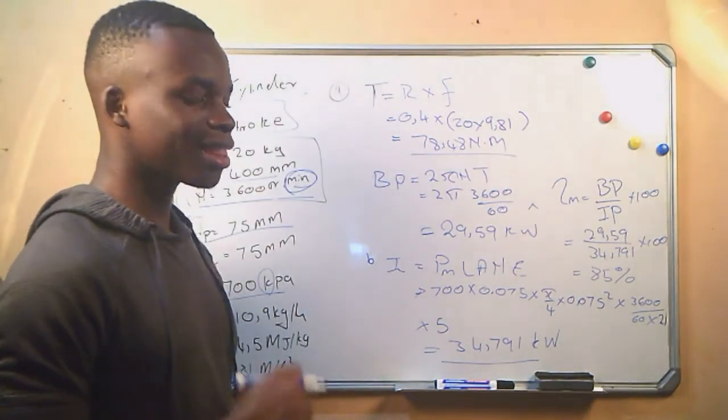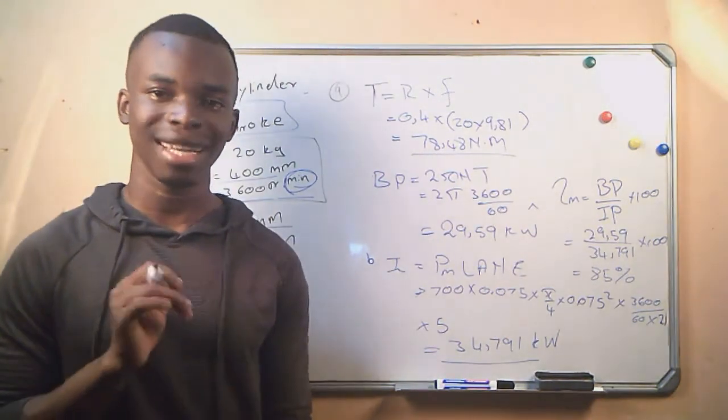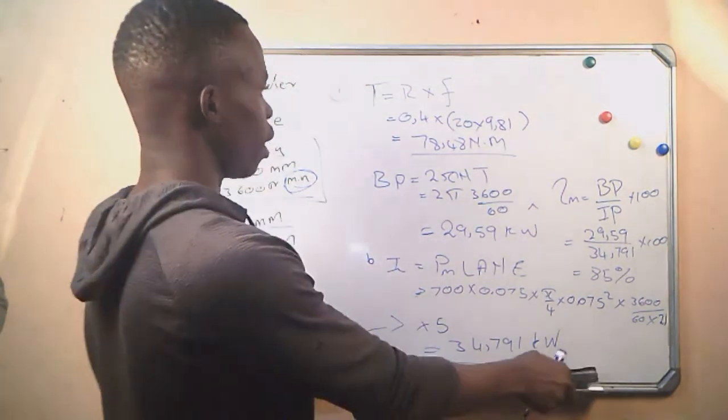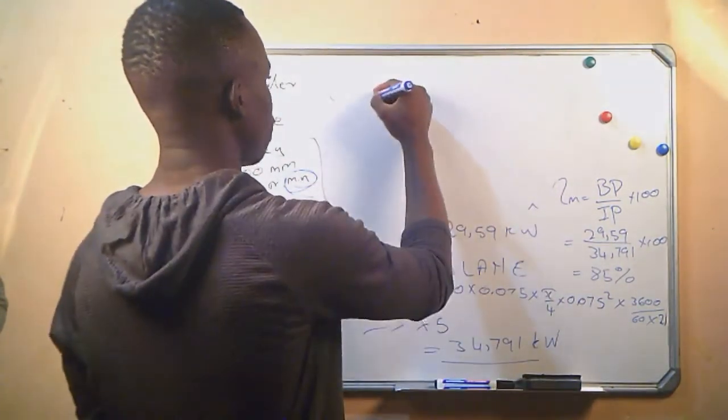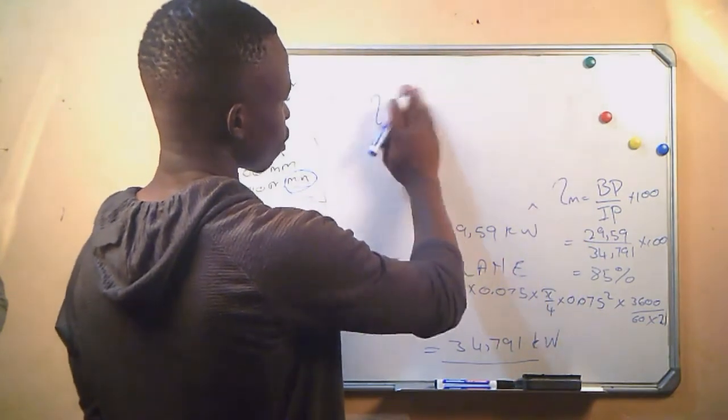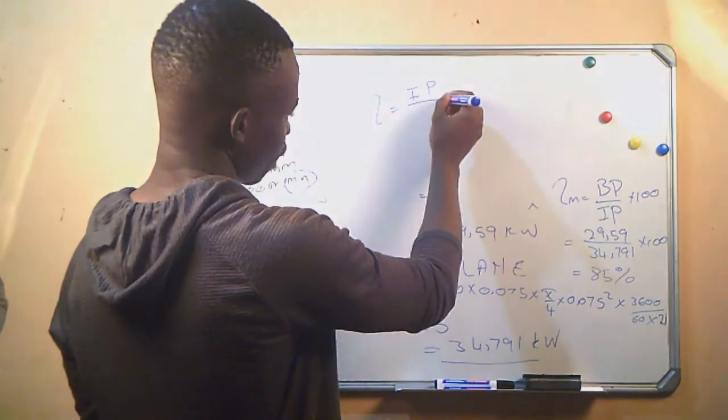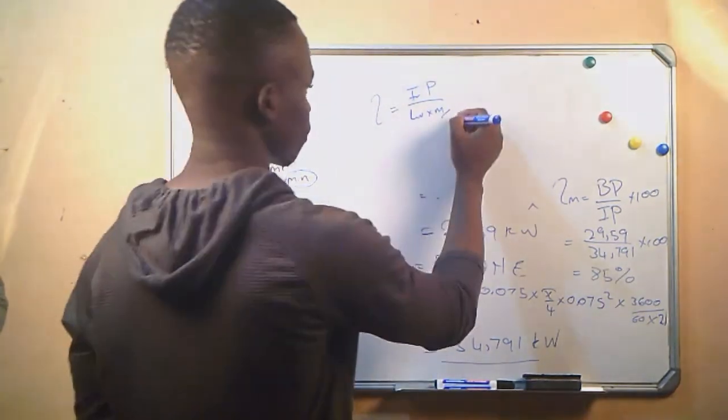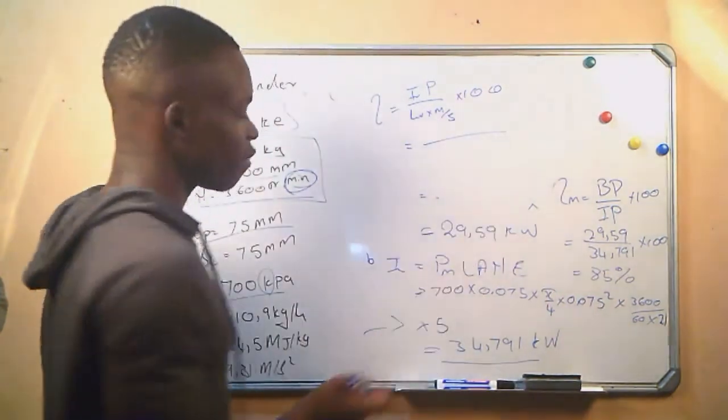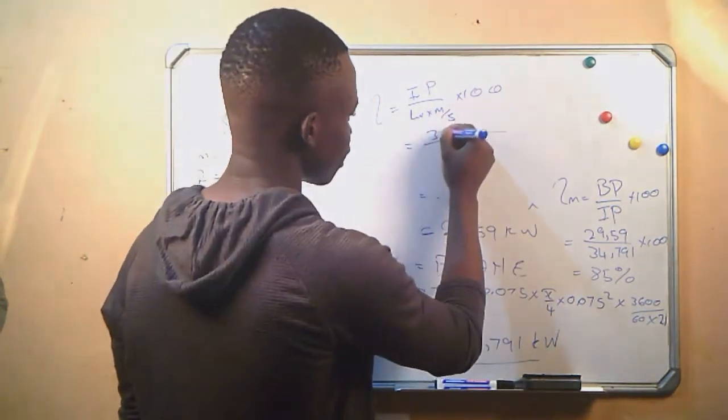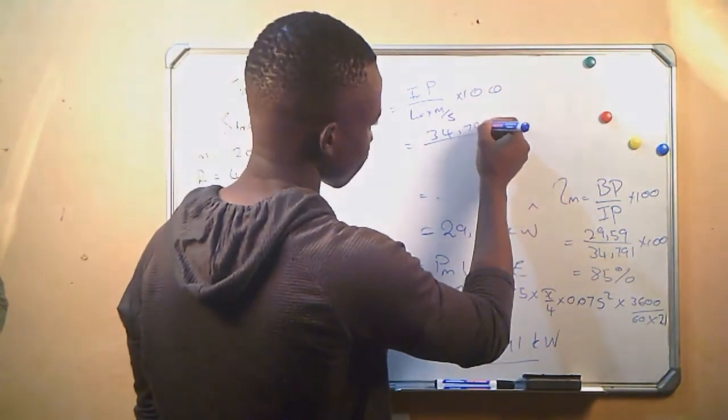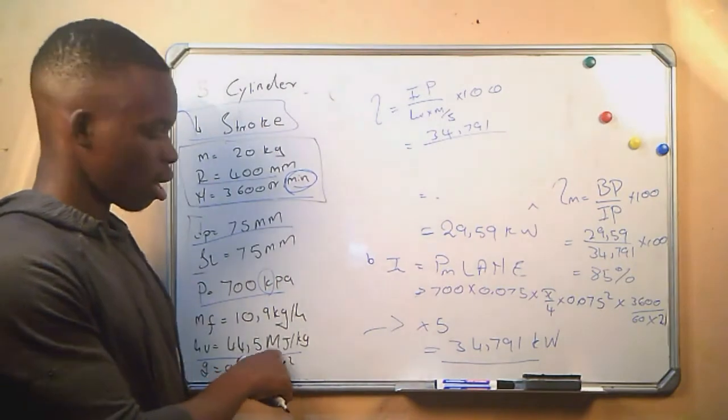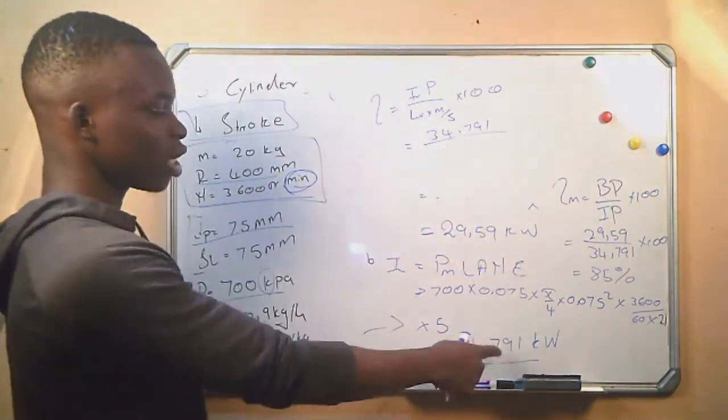Indicated thermal efficiency is the difference between the indicated power and the heat produced by the fuel. It's indicated power divided by heat value times the mass per second times 100. We have the indicated power, we just calculated it's 34.791. Heat value is in megajoules, we want it in kilojoules since this is in kilowatts. So 44 times 10 to the power 3, which gives us 44,500 kilojoules per kg.